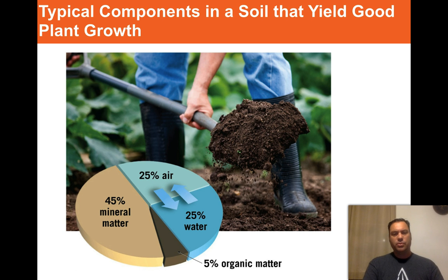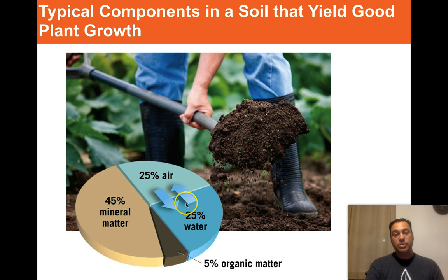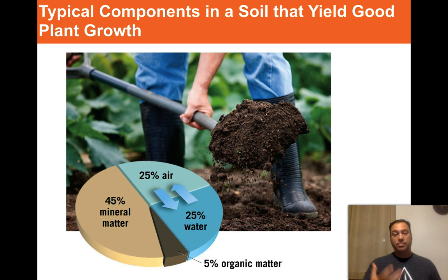Remember those four spheres? Here we see the typical components of soil that yield good plant growth. It turns out that soil is about 45% minerals — so less than half is actually mineral matter. About 5% is organic matter: bacteria, decaying roots, maybe some moss. There's also water — good soil has about 25% water at all times. And the rest is open air space, about 25% air volume, allowing good air transfer between the roots and the surface. The soil will basically be breathing.